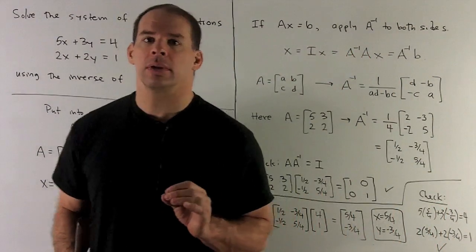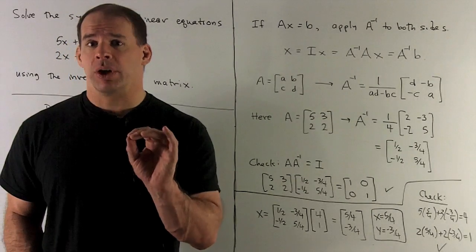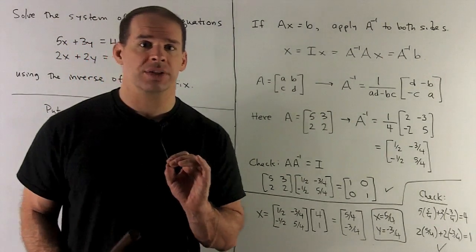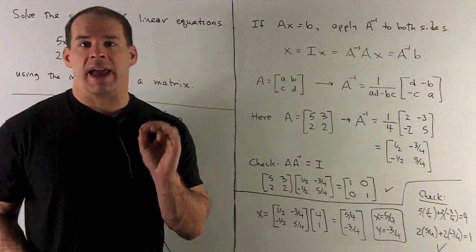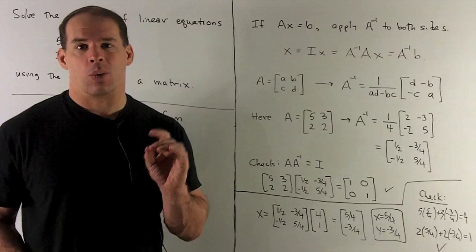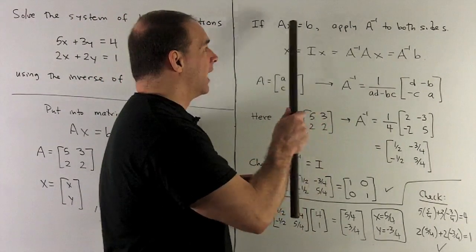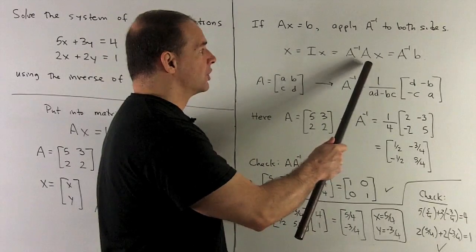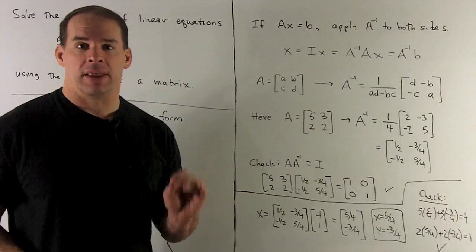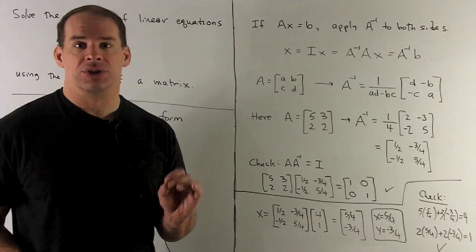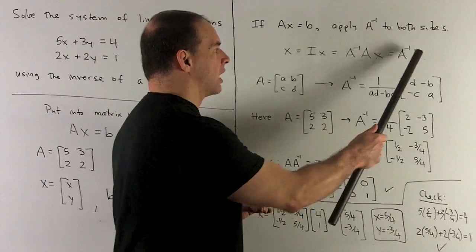Now we want to solve using an inverse. Here's the algebra: we have Ax equals b, then apply A inverse to both sides. A inverse times A is the identity matrix, and the identity times any vector just gives that vector back. So we get x equals A inverse times b.